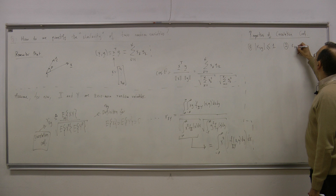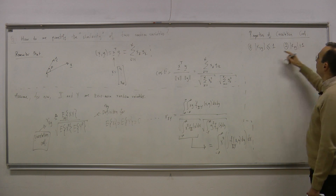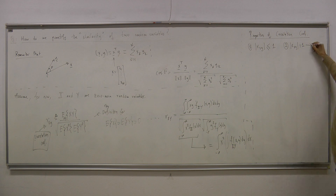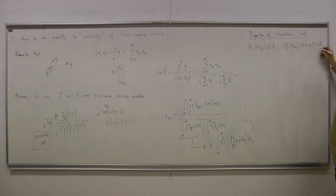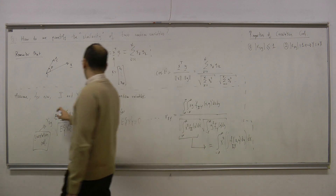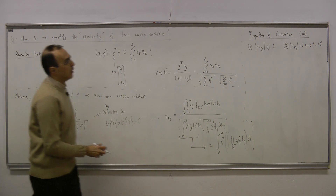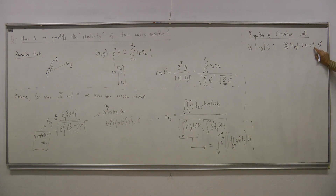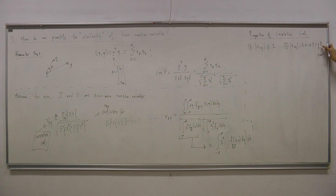Property two: if rxy in magnitude equals 1, the maximum possible value, then random variable y equals a times random variable x for some scalar a. This says that if the correlation coefficient takes its maximum value, y is a scaled version of x — they are aligned.